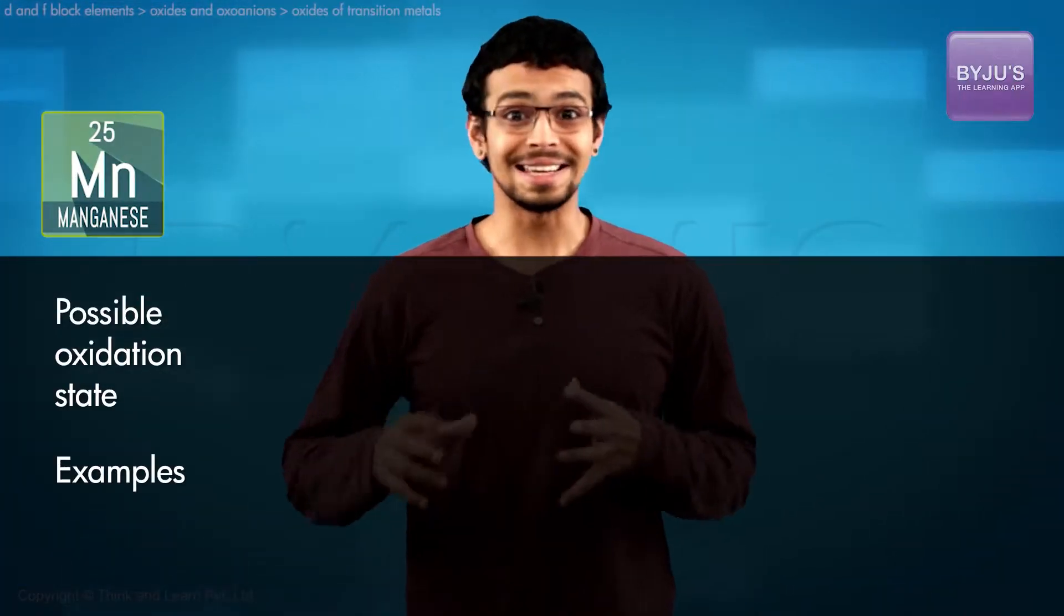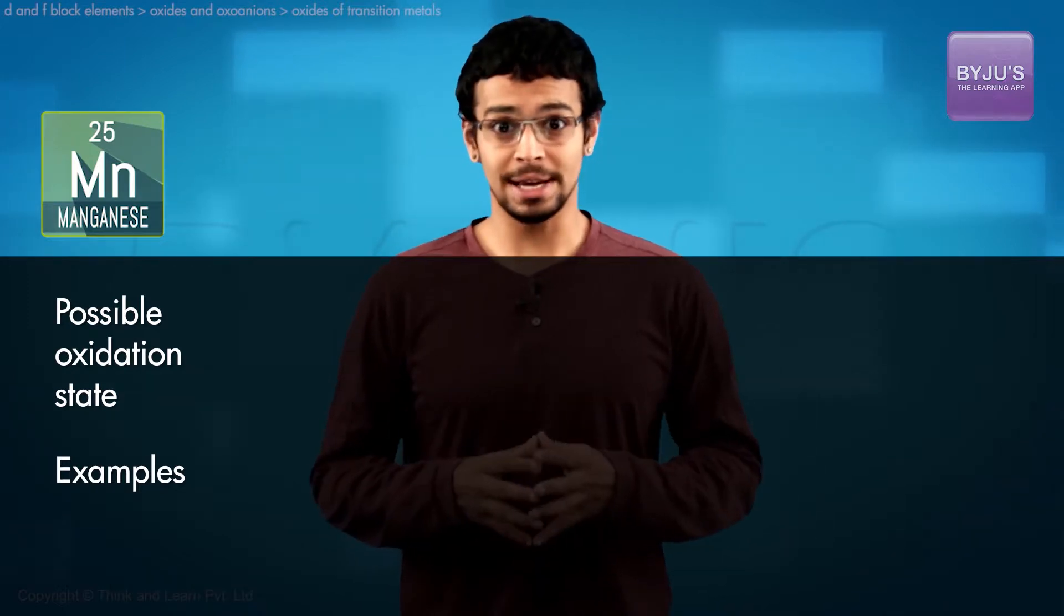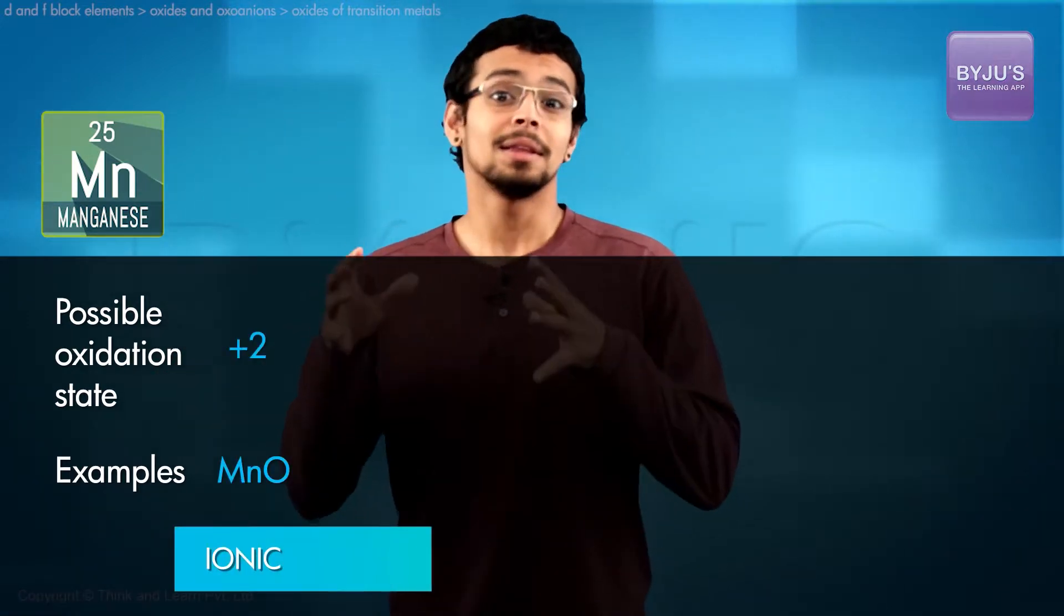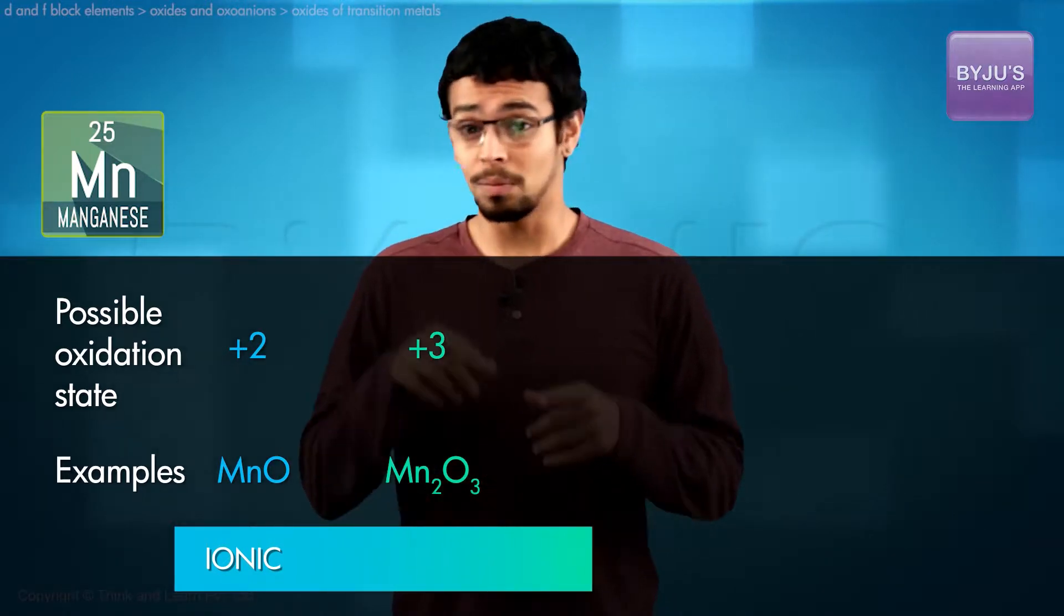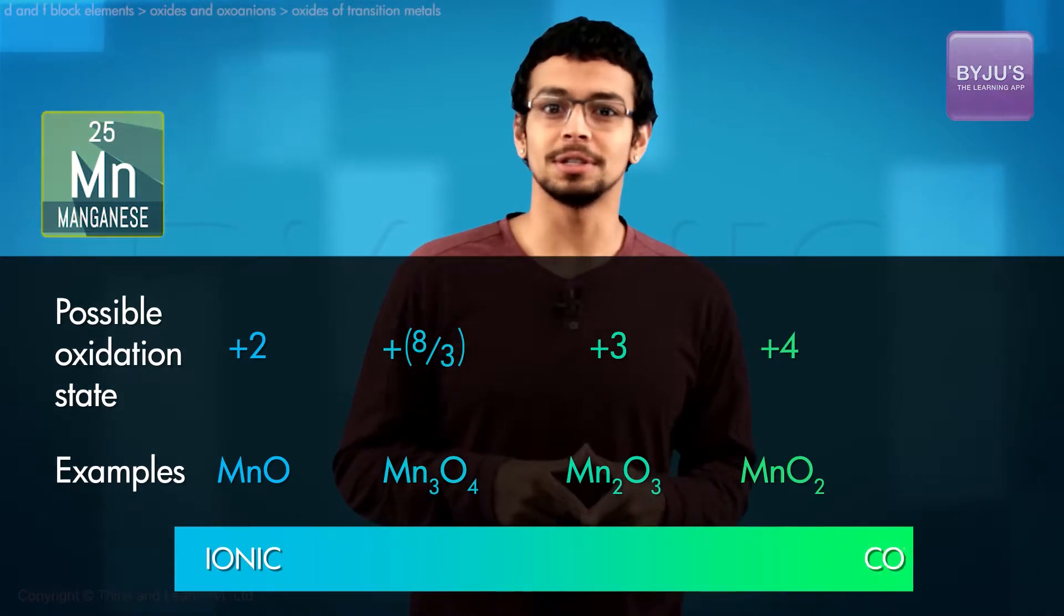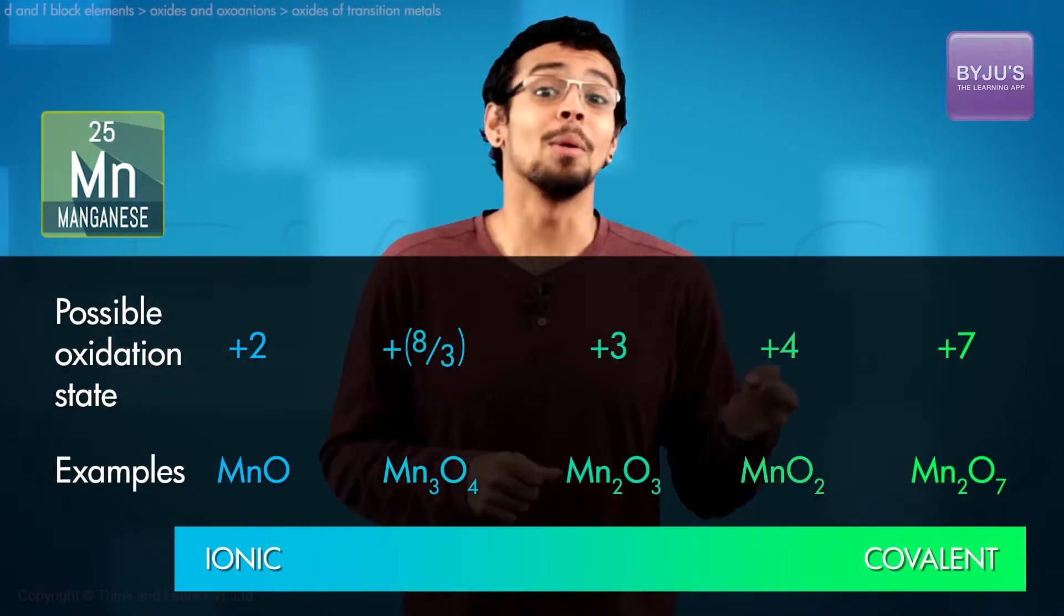The oxidation number of manganese with decreasing ionic character in manganese oxides would start with ionic at +2 oxidation state, +3 oxidation state, we also have the +8/3 oxidation state, the +4 oxidation state, and +7 which is predominantly covalent.